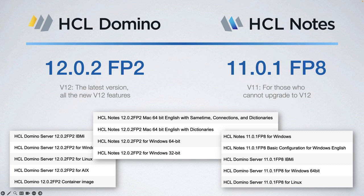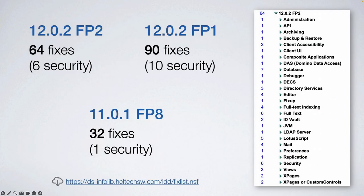The latest versions are on the screen, including fix packs. Everybody on version 12.0.2 could consider upgrading to fix pack 2, which was released during summer. For those who cannot upgrade to the latest version 12 and have to stay on version 11, a new fix pack 8 was released. There are many fixes including security fixes, because we can expose Domino services to the public internet, which is why we have to focus on strong security protection.